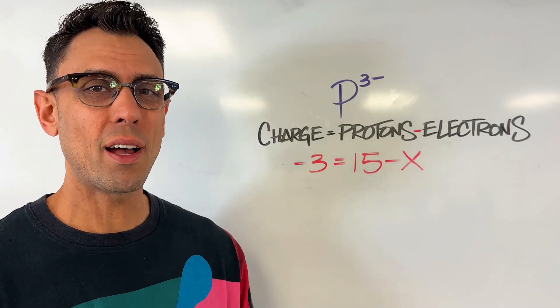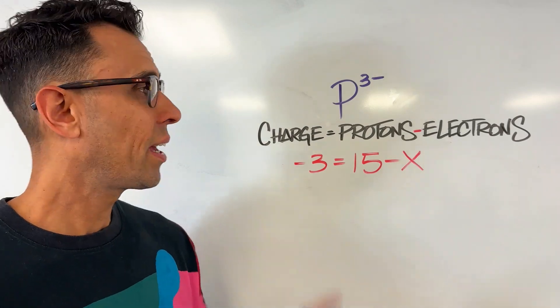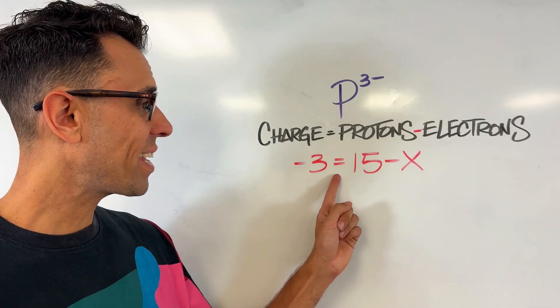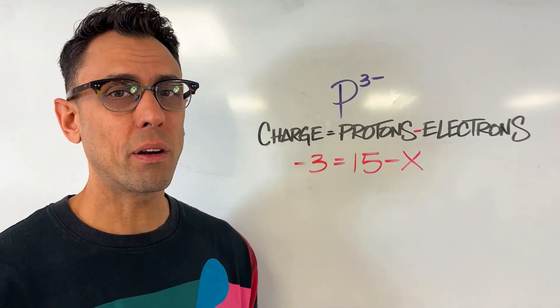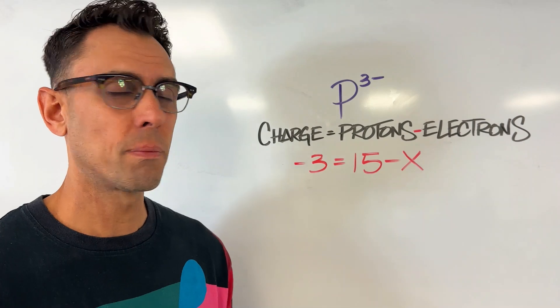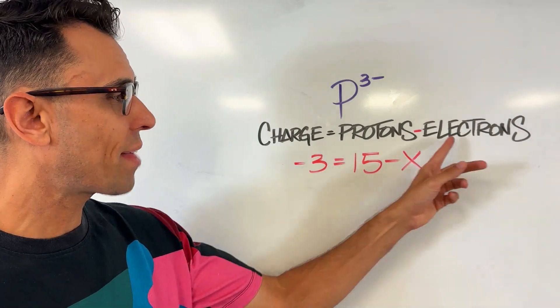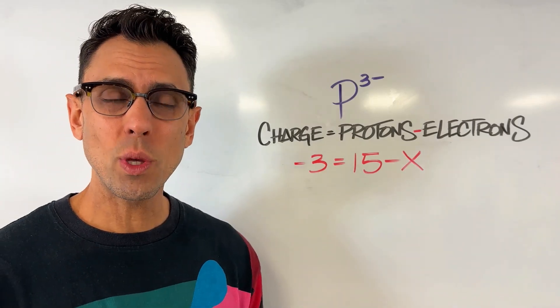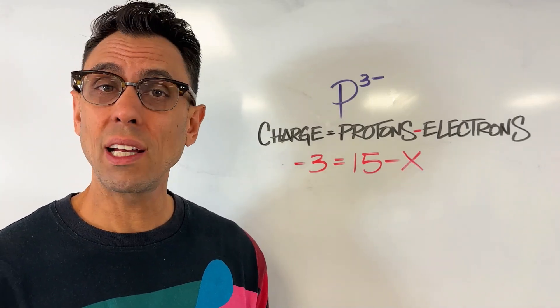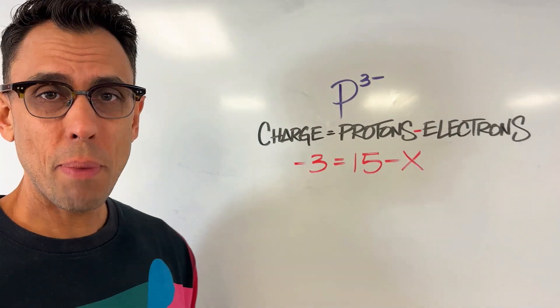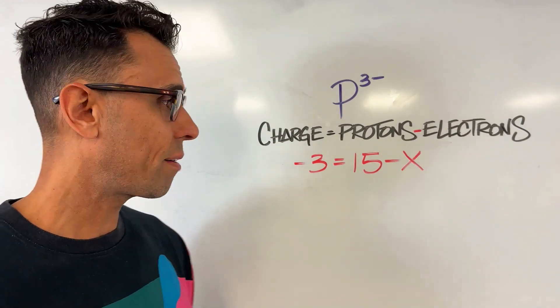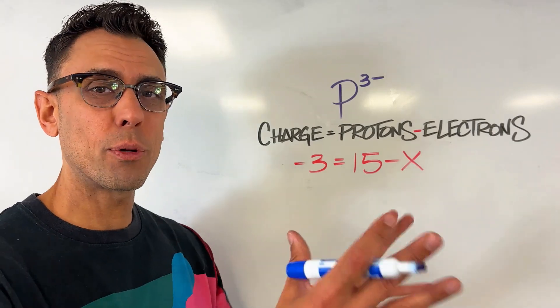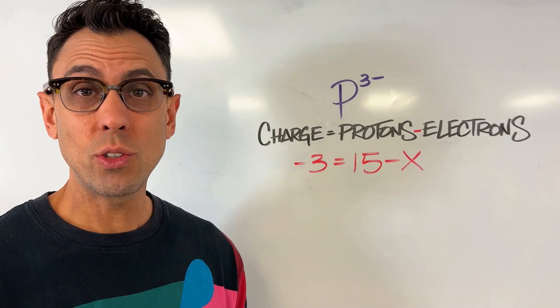Charge is equal to the number of protons minus the number of electrons. In this example, phosphorus has a charge of negative 3. That's equal to the number of protons, which, if you check a periodic table, is 15 for phosphorus. Now we need to subtract from that the number of electrons, and remember, that's what we don't know. So I'm choosing to represent the electrons with the variable x, technically you could use any letter you like. Now we have to use some basic algebra to do the problem solving. We want to isolate the x on one side of the equal symbol, and have all the numbers move to the other side. So here's how I do this problem.